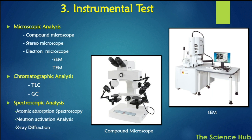For instrumental and microscopic analysis, the tools used include compound microscope, stereo microscope, and electron microscope — with two types available. Chromatographic methods include thin layer chromatography and gas chromatography. Spectroscopic analysis includes atomic absorption spectroscopy, neutron activation analysis, and X-ray diffraction. An overview of the stereo microscope and compound microscope is shown in the photographs.